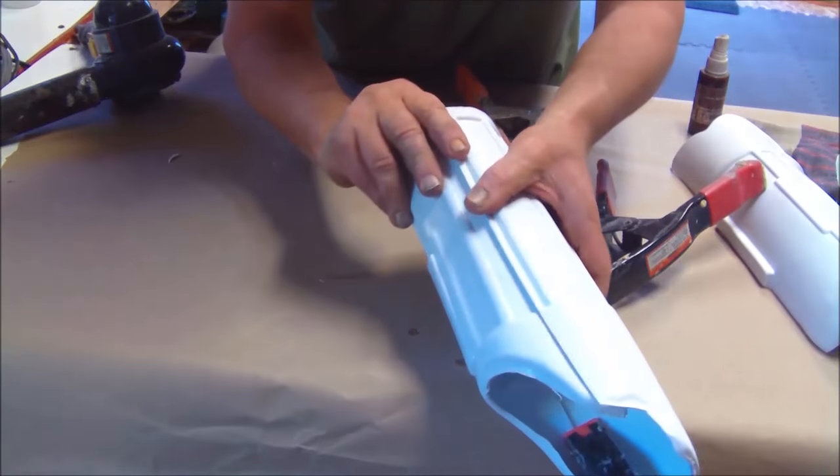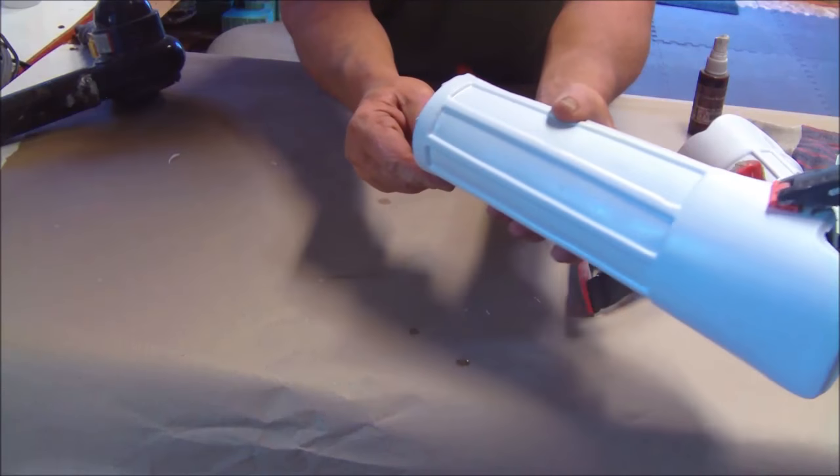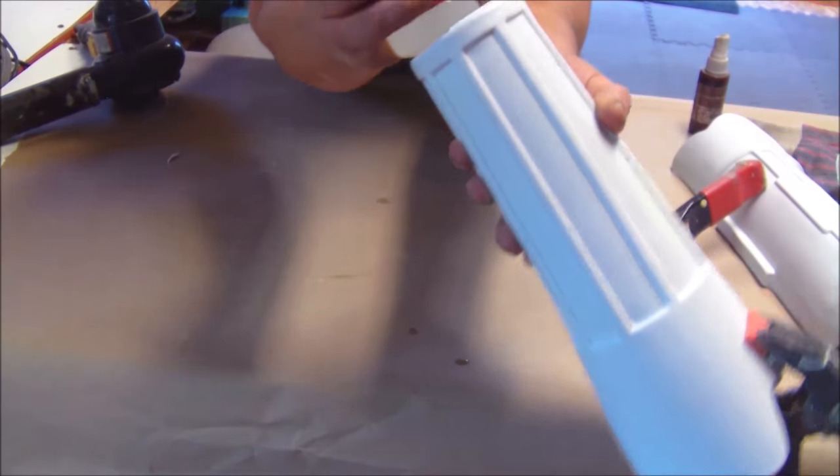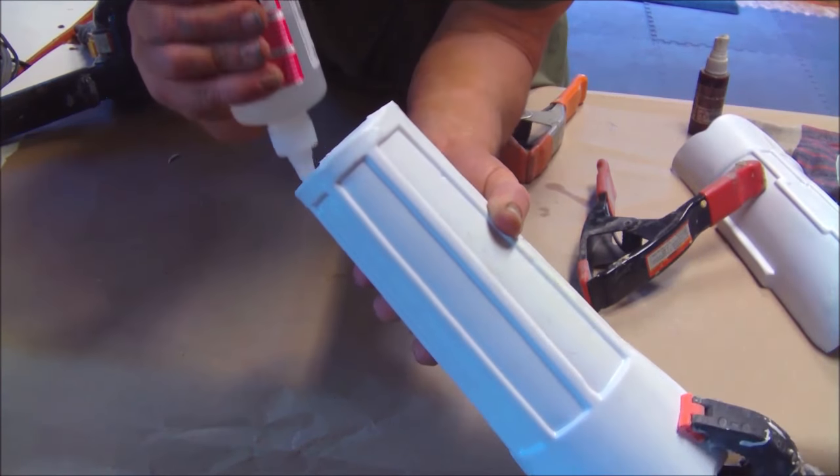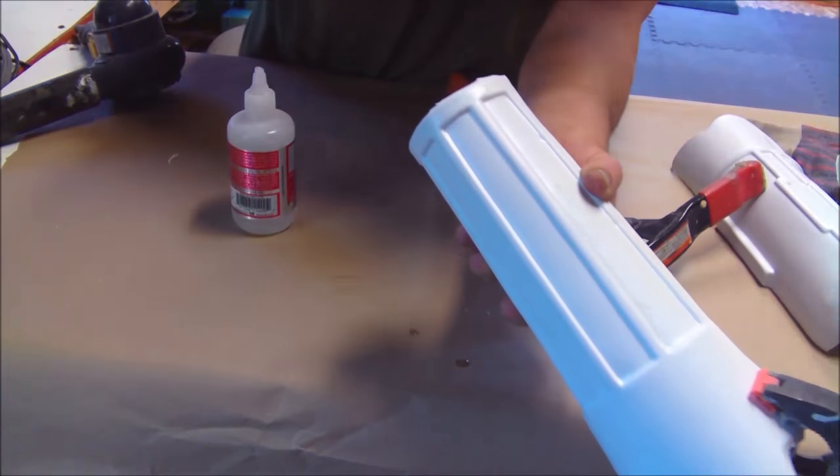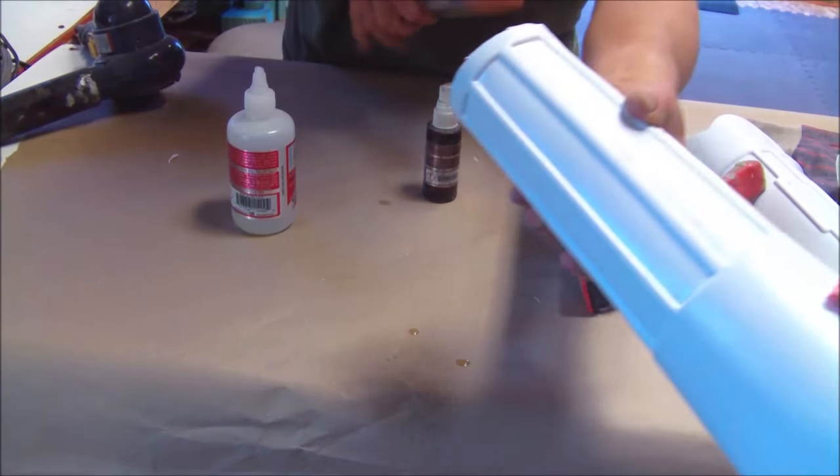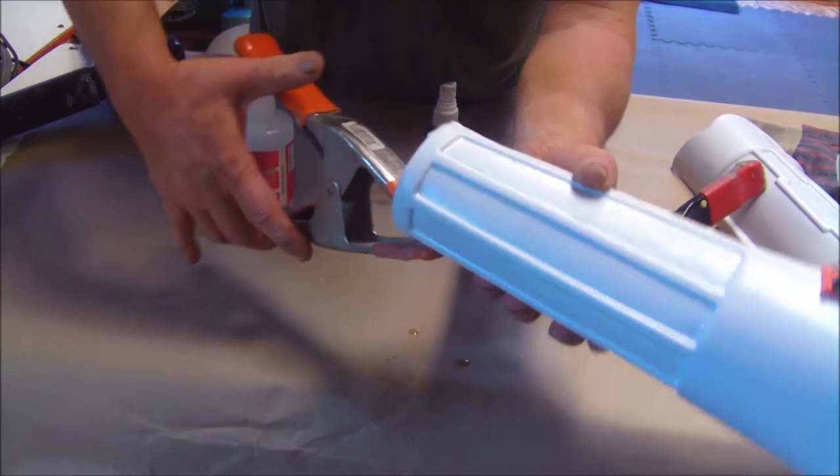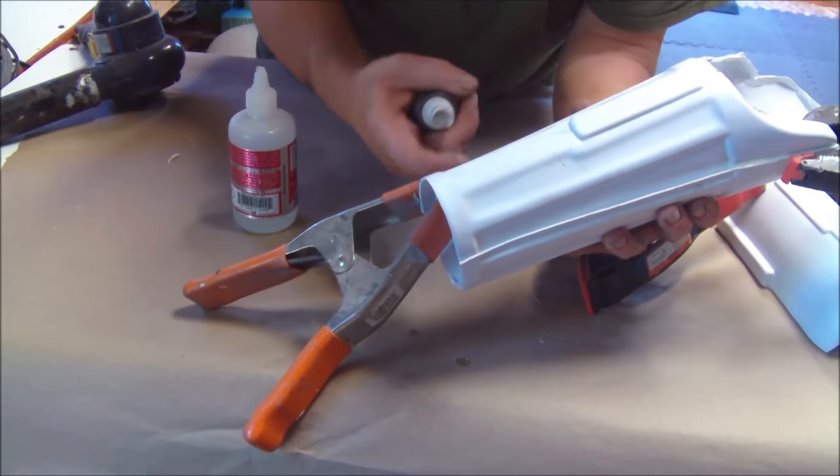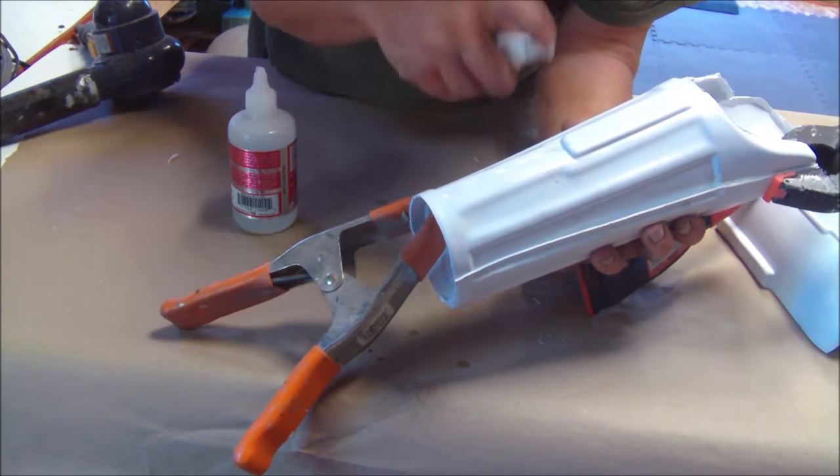We've got the first side done. I'm just going to hold this forearm in position where I want it. Grab my super glue, drip it in, and angle this arm down so I can get this glue dripped generously down that seam line. Right now it's running down the seam. Spray kicker and a clamp. And that's it.